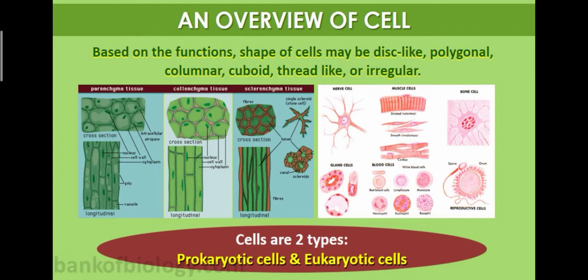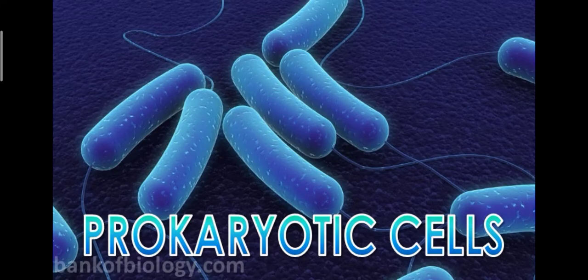Cells are of two types: prokaryotic cells and eukaryotic cells. We have already discussed prokaryotic and eukaryotic in Chapters 1 and 2. This chapter is easy in Class 11 because we have been studying cells since around Class 6. Now we will start with prokaryotic cells.